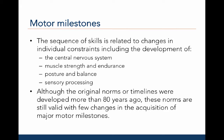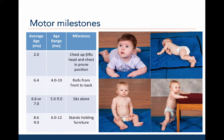Although original norms or timelines were developed more than 80 years ago, these norms are still valid, with few changes in the timing and acquisition of major motor milestones. The full list of motor milestones, as defined by Bailey or Shirley, are presented in table 2.6 in the book.